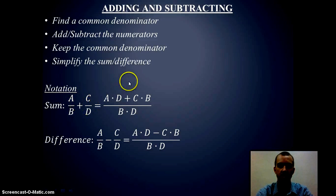If we put this into notation, if we have A over B plus C over D, we can see we've got the multiplication from the common denominator, and then we keep that common denominator, and it's either adding or subtracting.